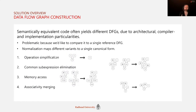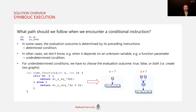One issue is that semantically equivalent code can yield different DFGs due to architecture, compiler, or implementation nuances. This is why we normalize them into a canonical form using a combination of operation simplification, elimination of common sub-expressions, memory access operand substitution, and associativity merging.